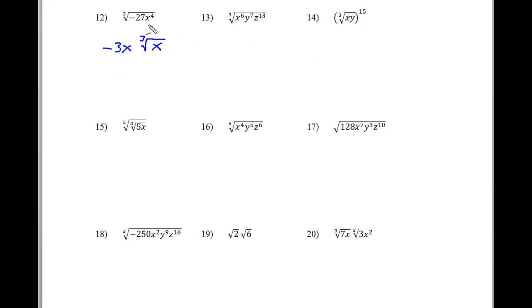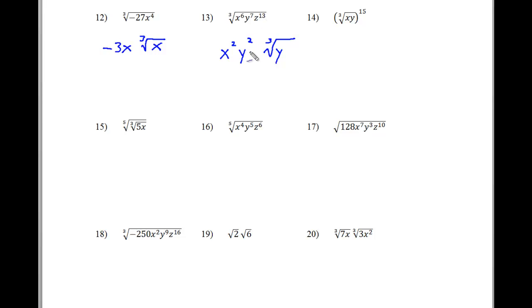You will see this pattern in problem 13 really exemplified, because 3 goes into 6 twice, giving x squared. Three goes into 7 twice, giving y squared, but with 1y left over, so we put that y into the cubic root. And 3 goes into 13 four times, so this is z to the fourth power, leaving 1z left over to get to 13. So that is the answer for problem number 13.